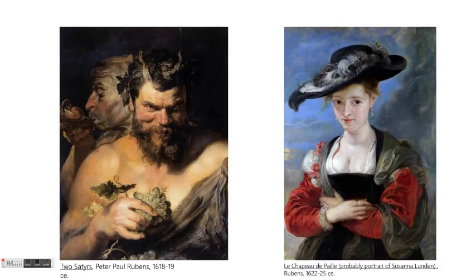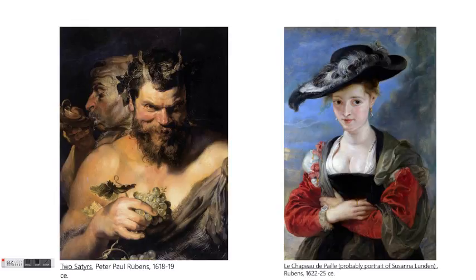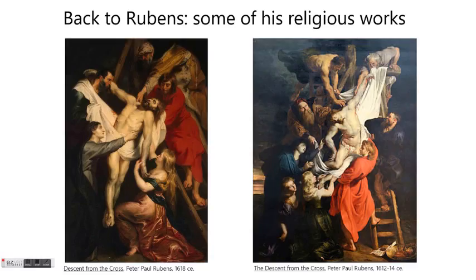Both these paintings are extraordinary, and they make an interesting contrast — one being a personal allegorical mythological painting, those two satyrs, with that very intense gaze — compared to the portrait believed to be of Suzanne, in London, where there is also a very different but very intense gaze. That one is at the National Gallery in London, and it goes by the name 'La Chapeau de Pei,' which means 'straw hat,' though it's believed that's just a mistranslation, because she's obviously not wearing a straw hat.